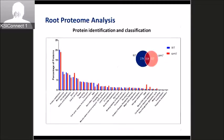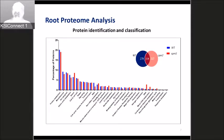Since roots are believed to be one of the first organs to sense drought stress, we decided to perform high-throughput comparative proteomics on the roots. We obtained very good coverage and were able to map proteins on all major metabolic pathways. We quantified 279 unique proteins in the wild type and 217 in CPM2.